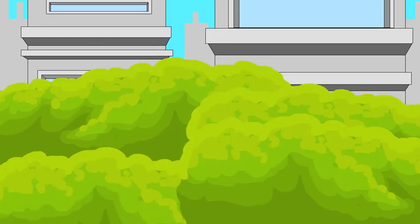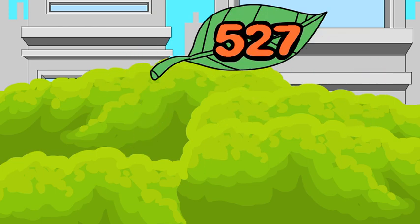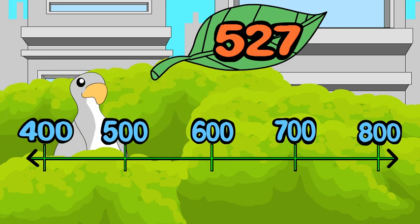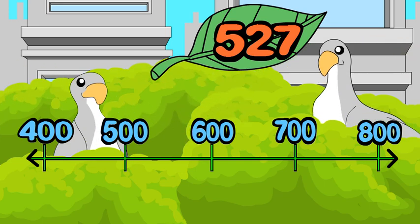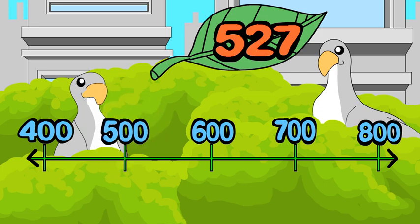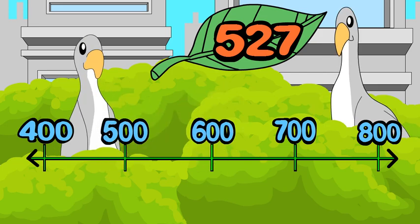You can round any number to the nearest hundred in four easy steps. Let's round 527 to the nearest hundred. Step one: figure out what benchmarks to use. 'To the nearest hundred' tells you to choose the hundred before 527 and the hundred after 527. Five hundred is the lower benchmark and six hundred is the higher benchmark.